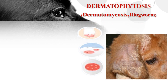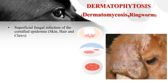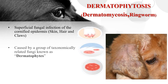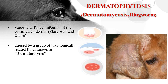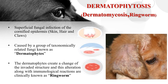Dermatophytosis is also known as dermatomycosis or ringworm. It is a superficial fungal infection of the cornified epidermis, which includes skin, hair, and claws. It is caused by a group of taxonomically related fungi known as dermatophytes. The dermatophytes create changes of the keratinized structure, and these alterations along with immunological reactions are clinically known as ringworm.